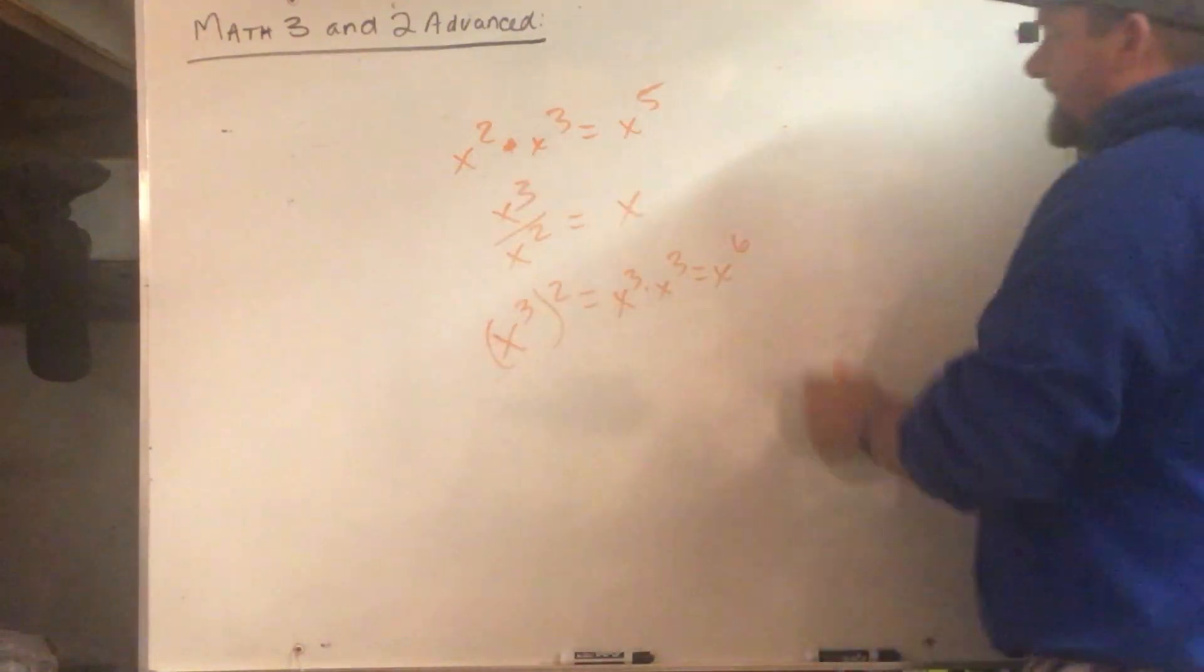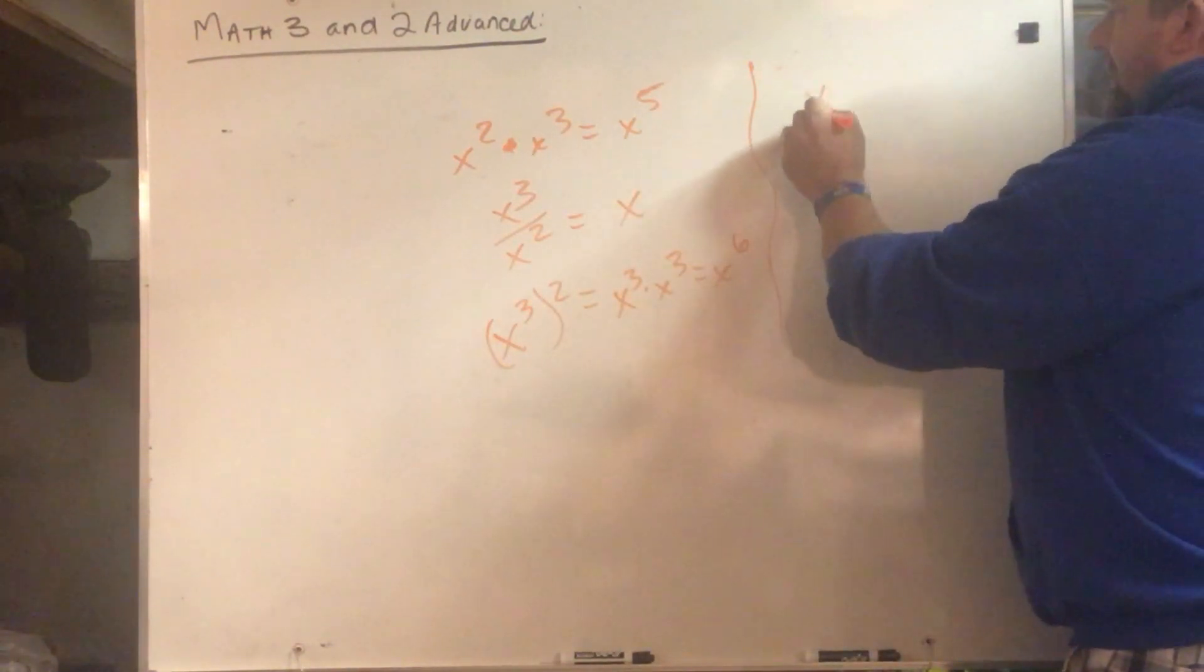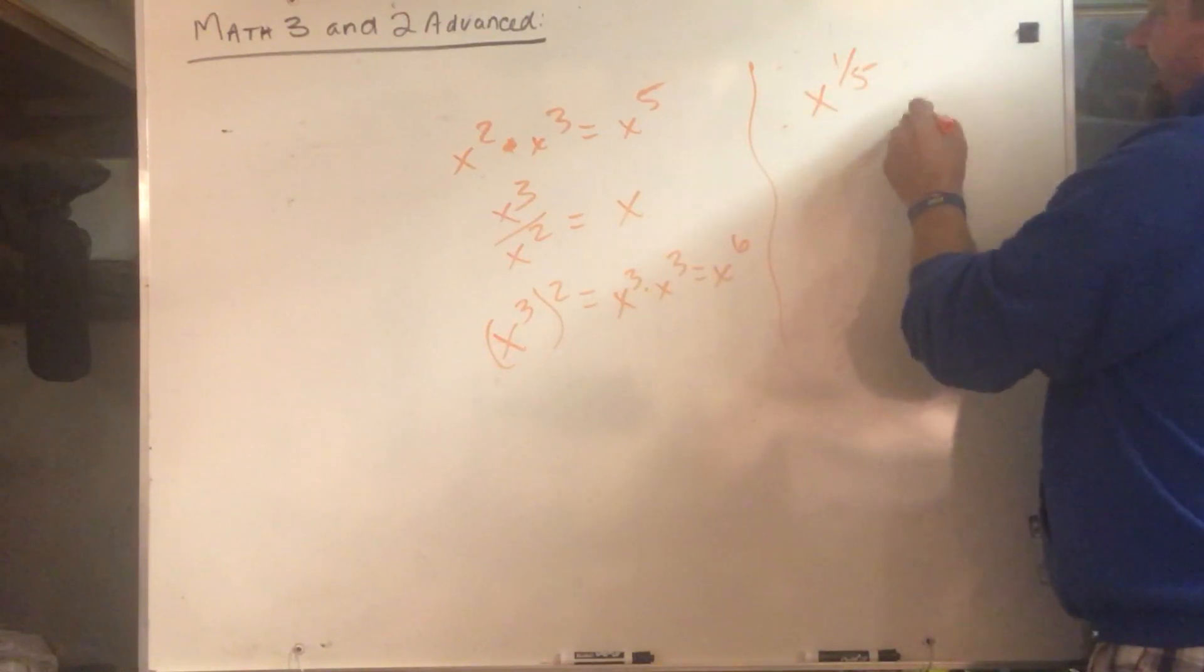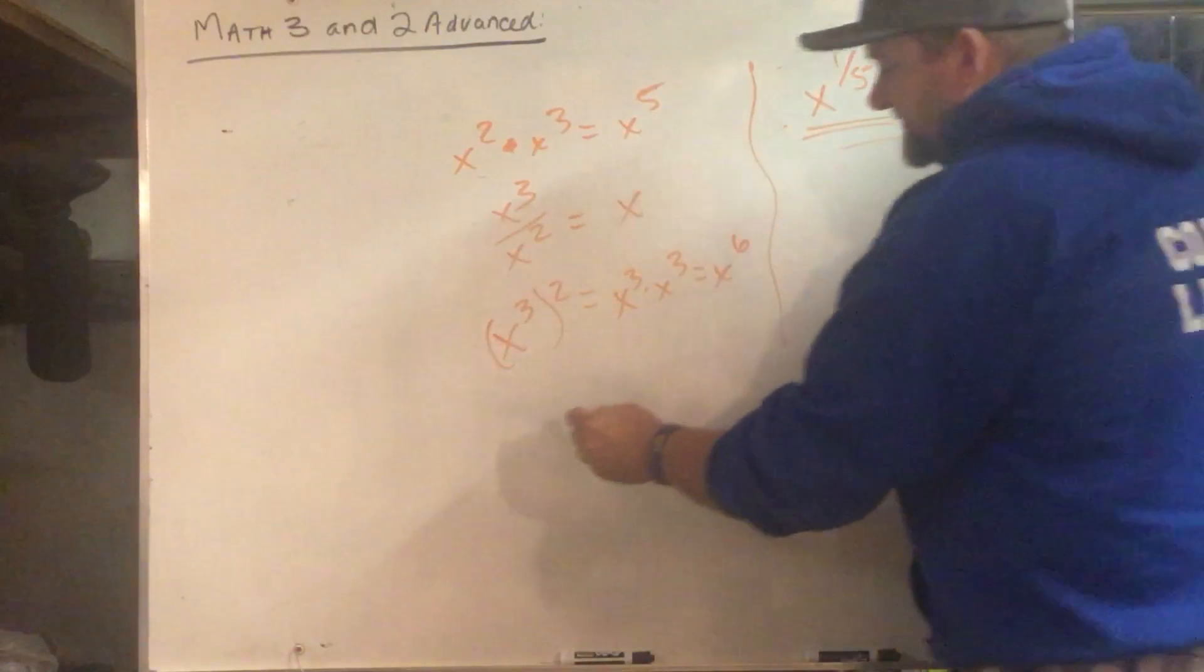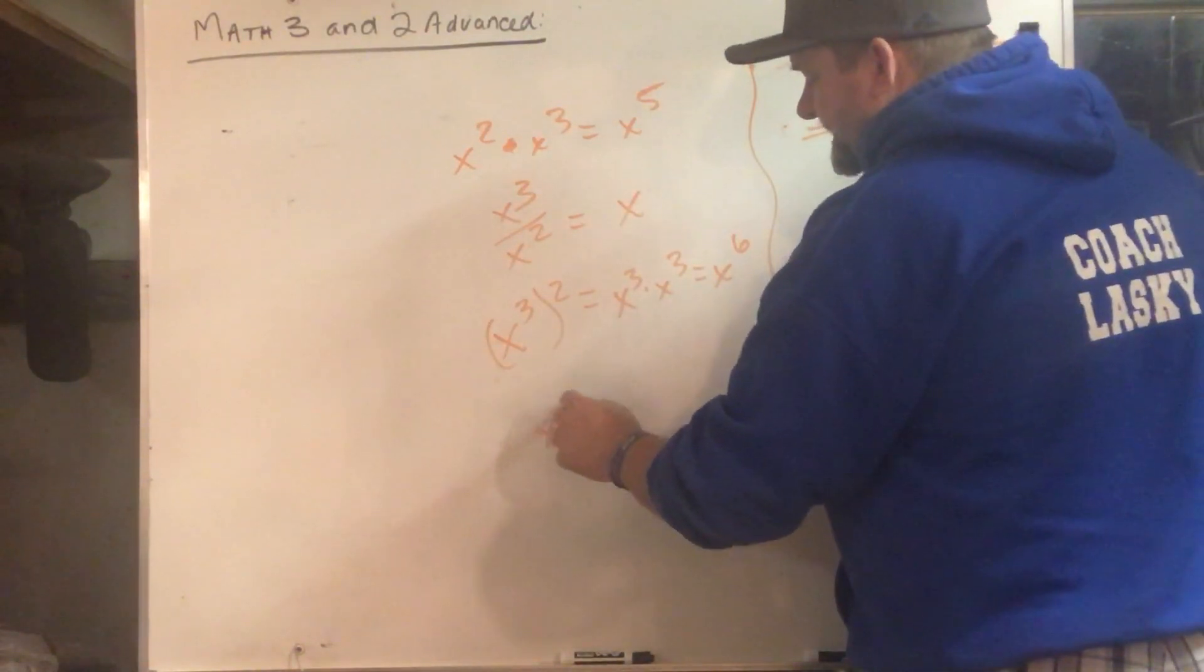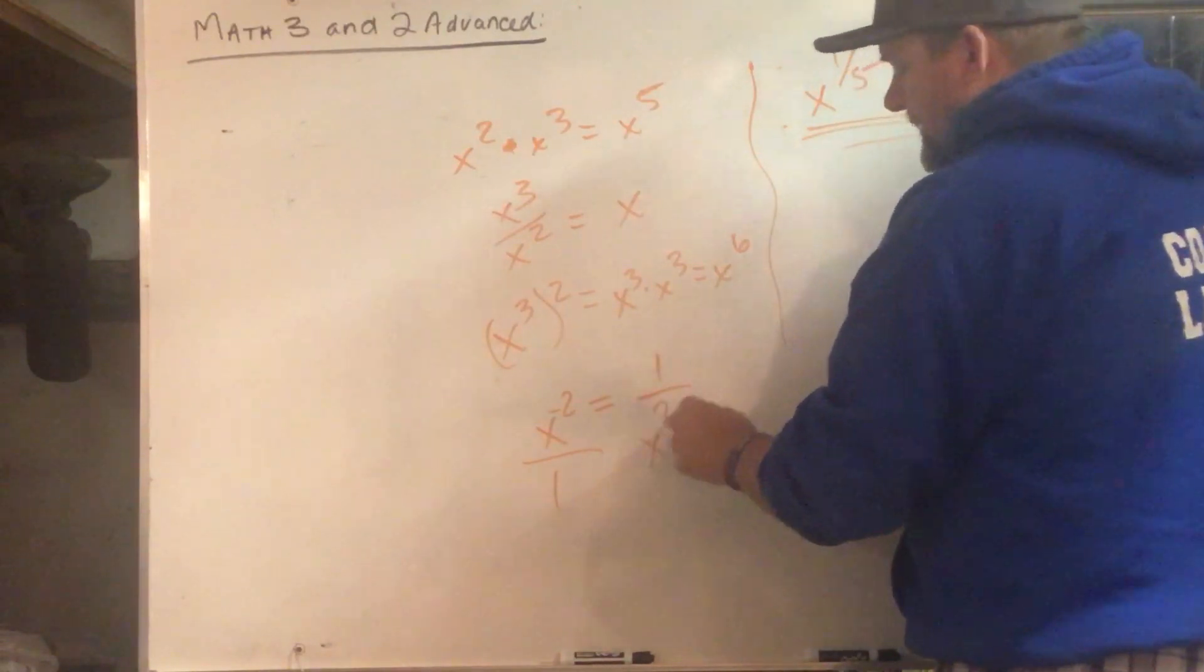Don't forget our rationals. x to the one-fifth is the same as the fifth root of x. Anytime it's a negative exponent, x to the negative two, it becomes its reciprocal: one over x squared.